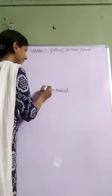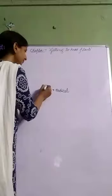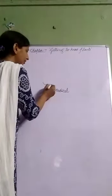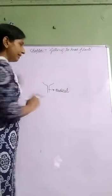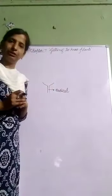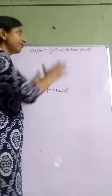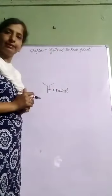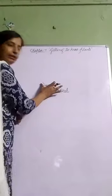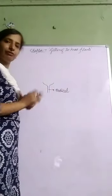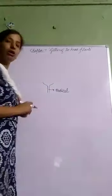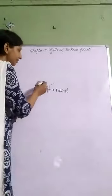Now, over this pedicel, there is a swollen portion on which the entire flower rests. This swollen portion, which bears all parts of a flower, is called the thalamus.